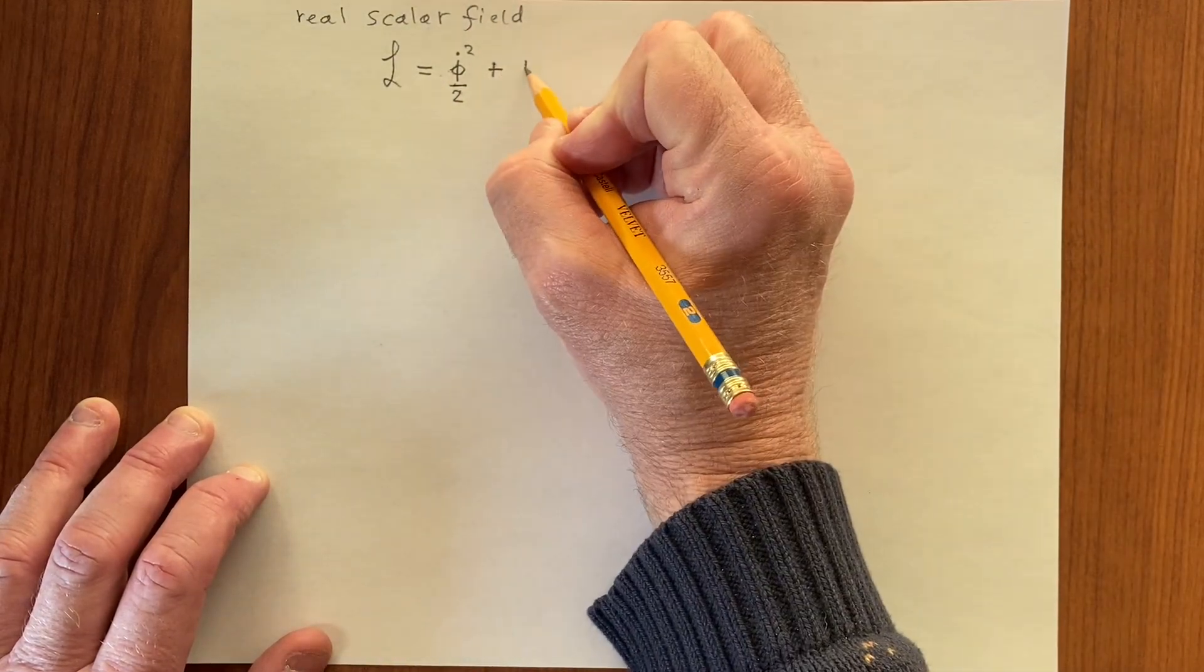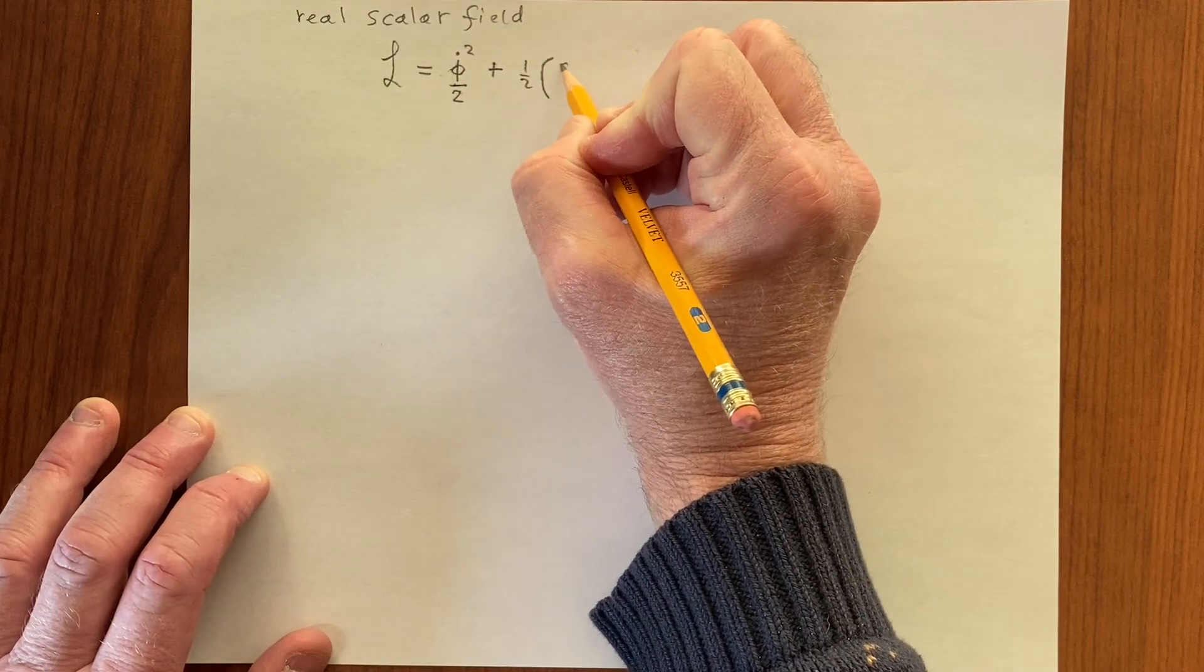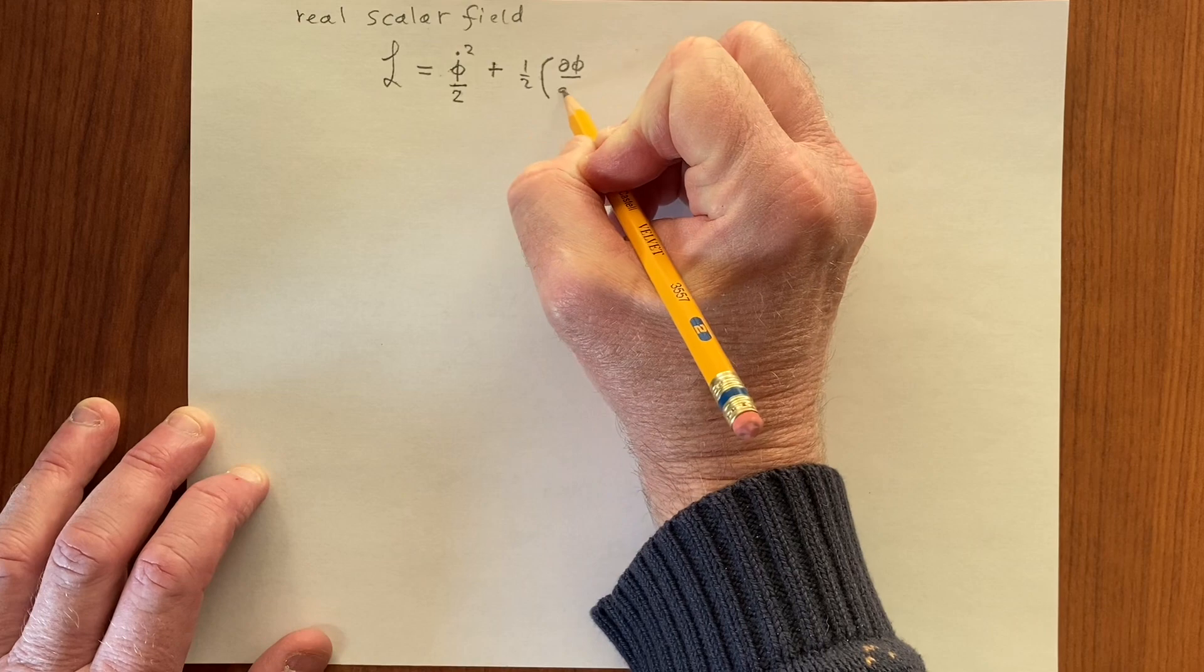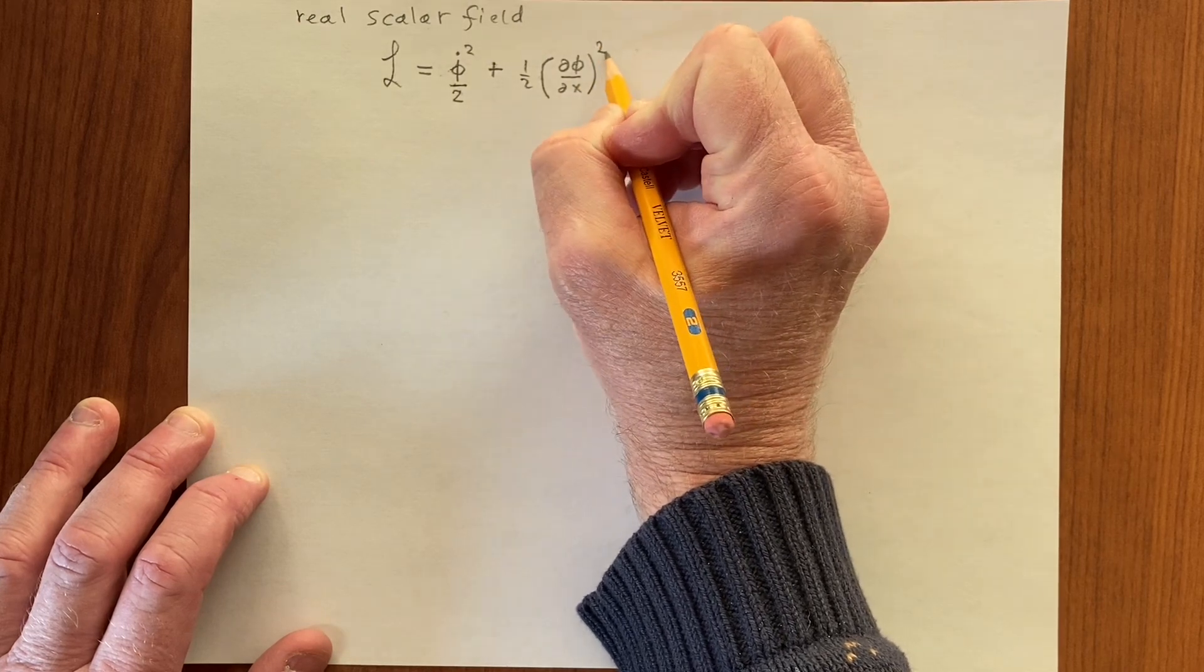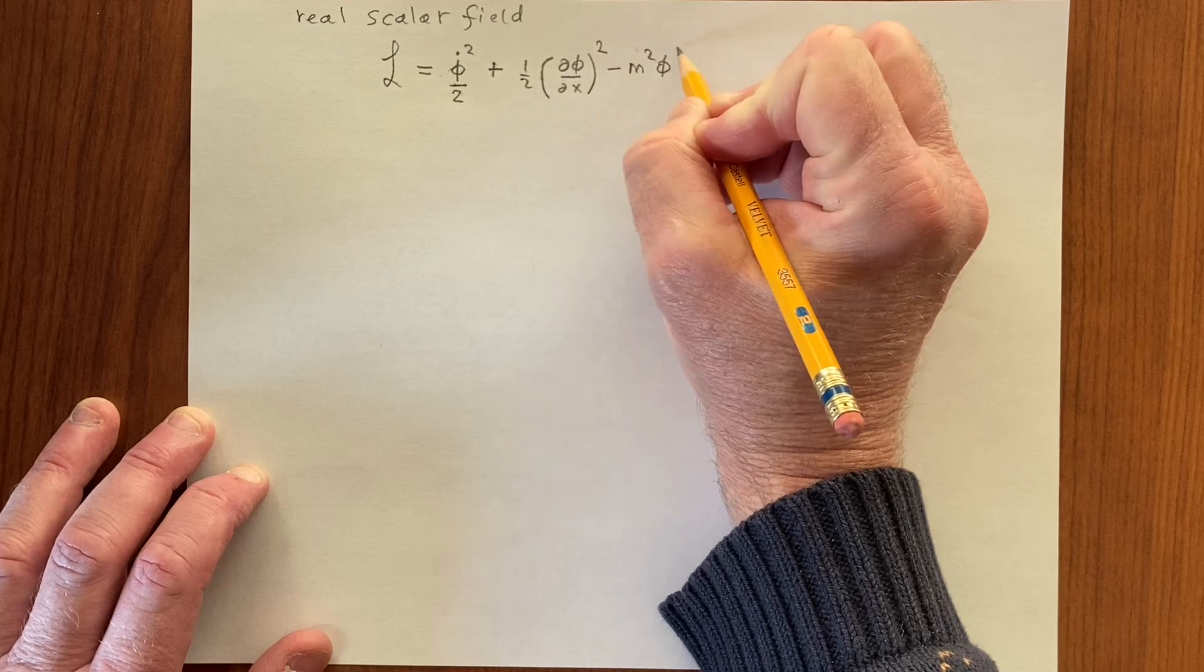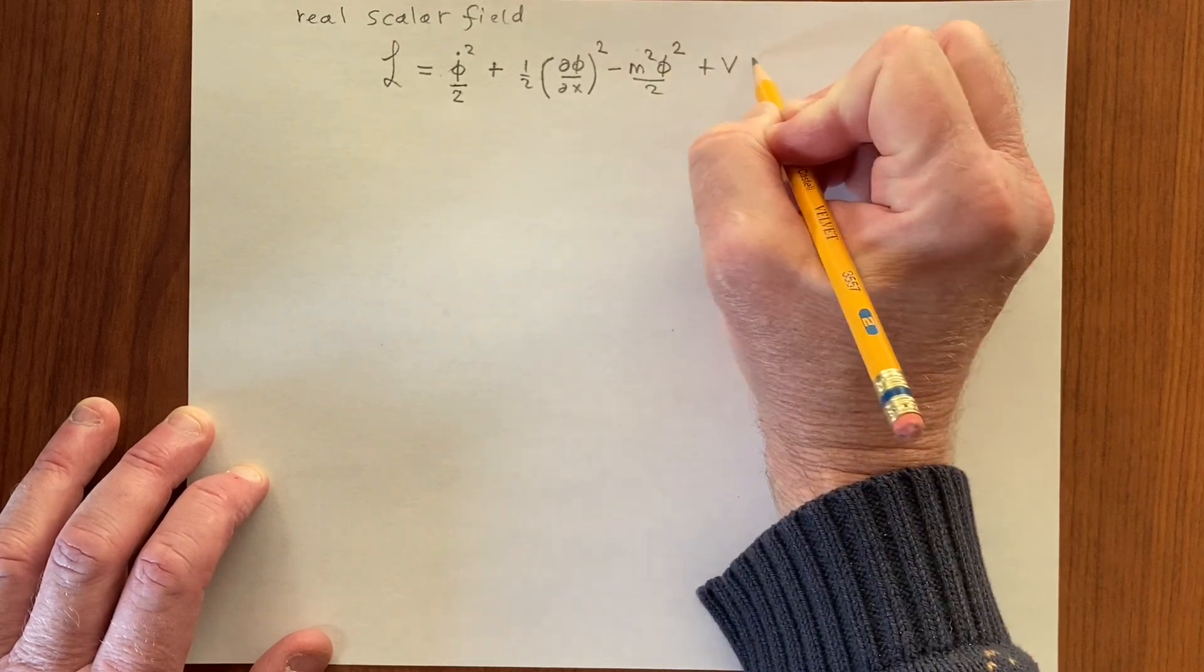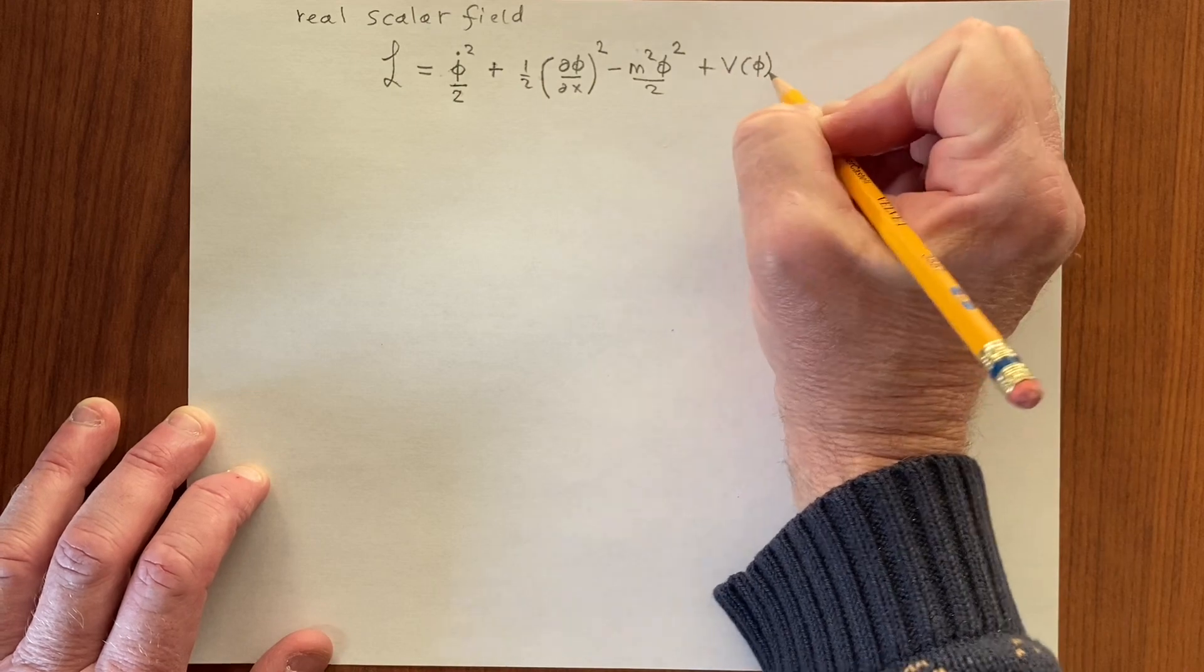So one-half d phi by dx squared, so it looks very similar to what we had before, except we'll add a function of phi, V(phi).